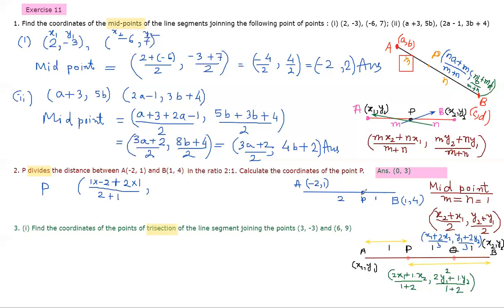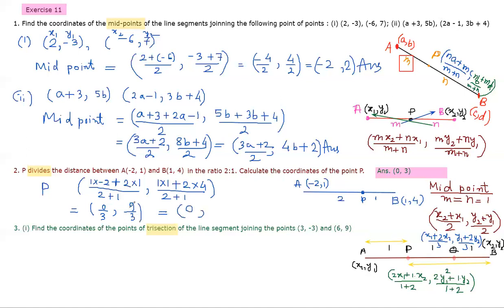For the y-coordinate: 1 will be multiplied with 1, and 2 will be multiplied with 4, divided by M plus N which is 3. So P's x-value: -2 plus 2 is 0, so 0 by 3. For y: 1 into 1 is 1, and 2 into 4 is 8, so 1 plus 8 is 9, giving 9 by 3 which is 3. So 0 by 3 is 0, and the coordinate of P is (0, 3).